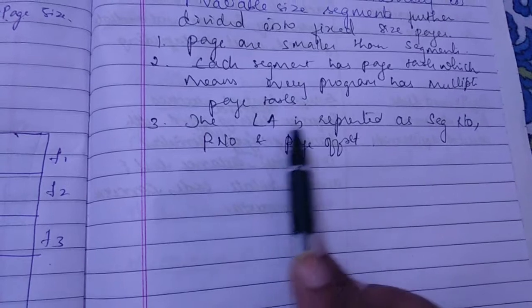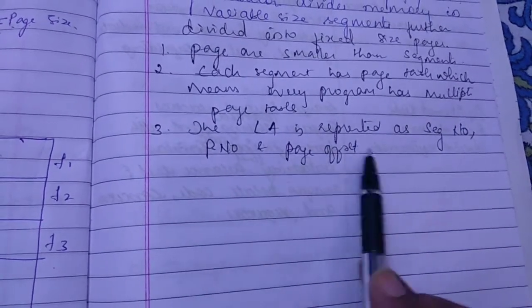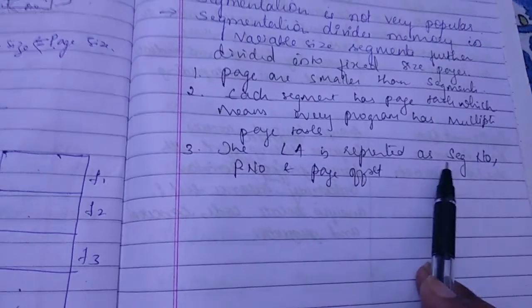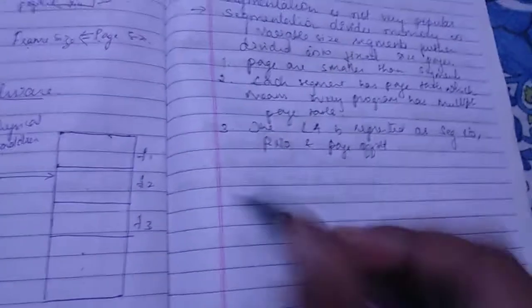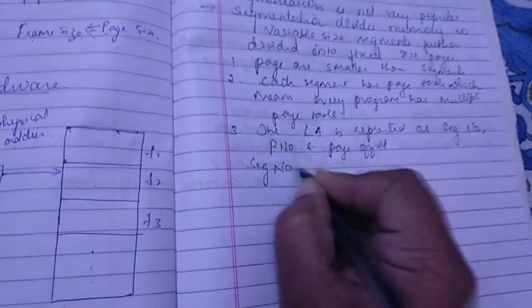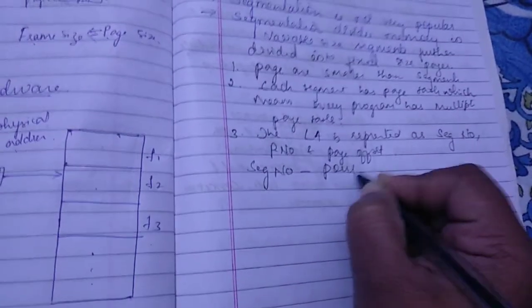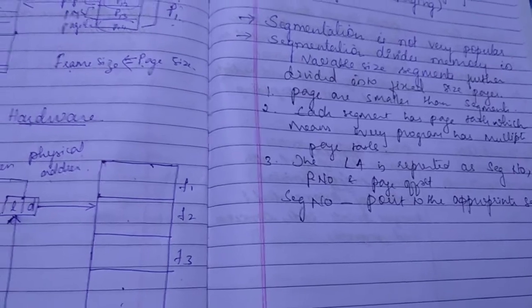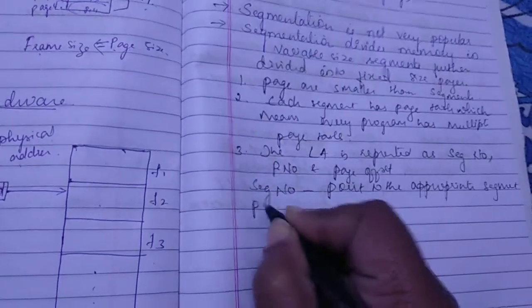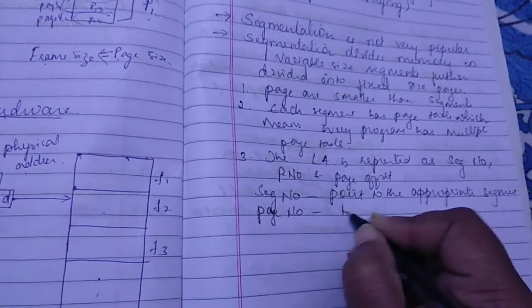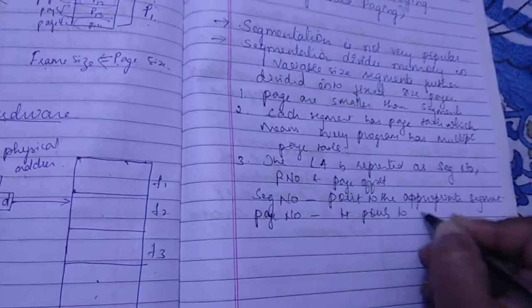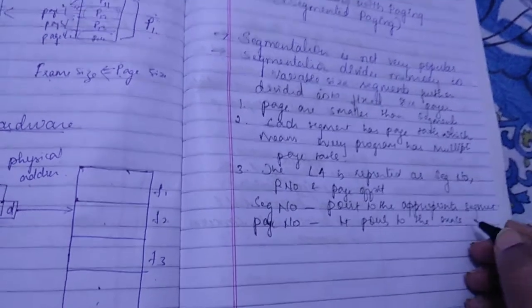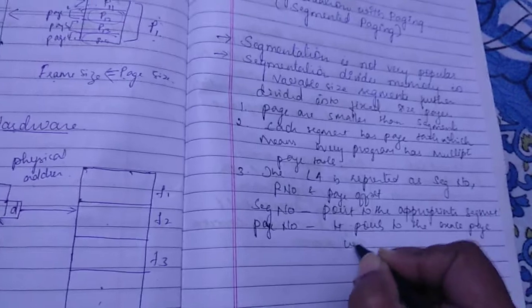So the logical address is represented as segment number, page number and page offset. And the segment number points to the appropriate segment. So what does the segment number do? The segment number will point out to the appropriate or specific segment. Similarly, the page number points to the exact page within the segment.